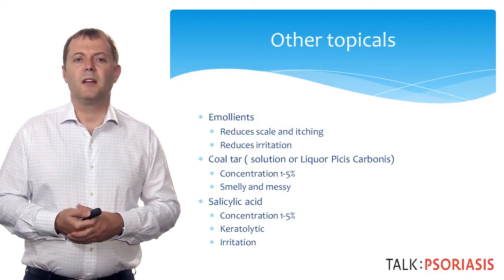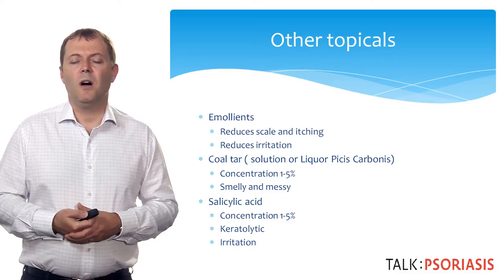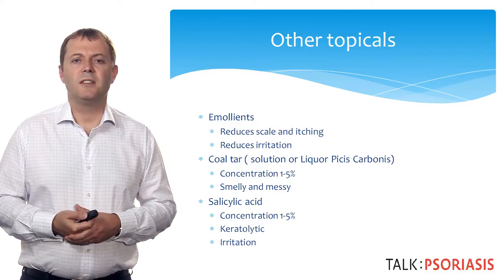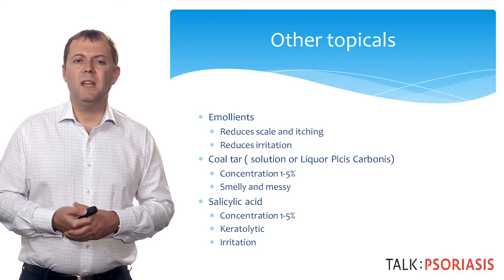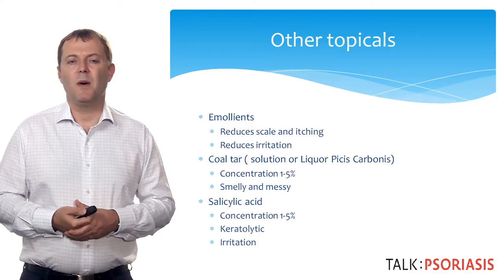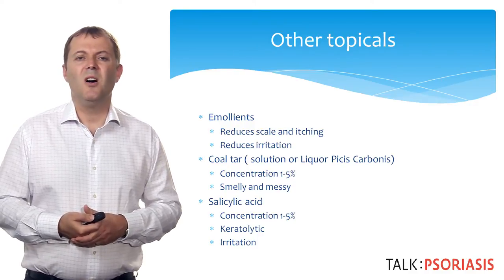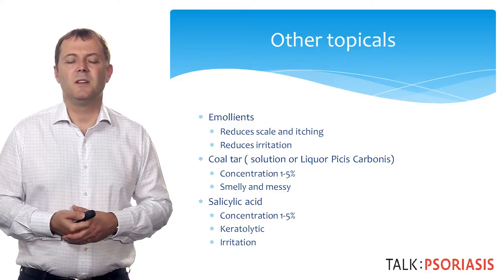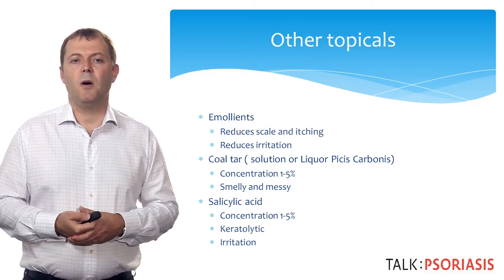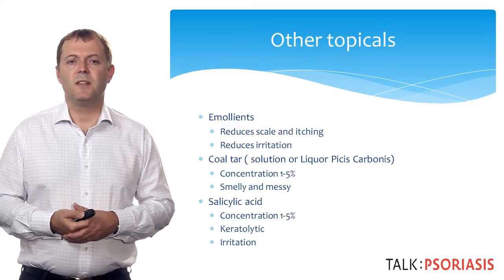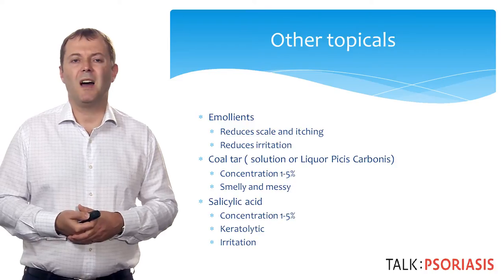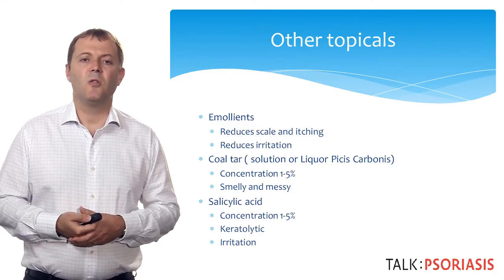Other topical treatments include emollients — while the skin is not dry they reduce scale and itching and can reduce irritation. Coal tar solution (LPC) has been used for many years for its anti-inflammatory properties; it can be made up in an emollient base at concentrations usually between one and five percent, though it is limited because it's smelly and messy. Salicylic acid can also be made up in emollient bases at one to five percent and is very useful as a keratolytic, particularly for the scalp or thicker plaques, though higher concentrations can cause irritation.